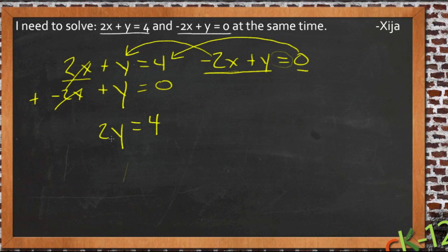So now we just have 2y equals 4 and we can divide both sides by 2, cancel. 4 divided by 2 is 2 and find out that y equals 2.